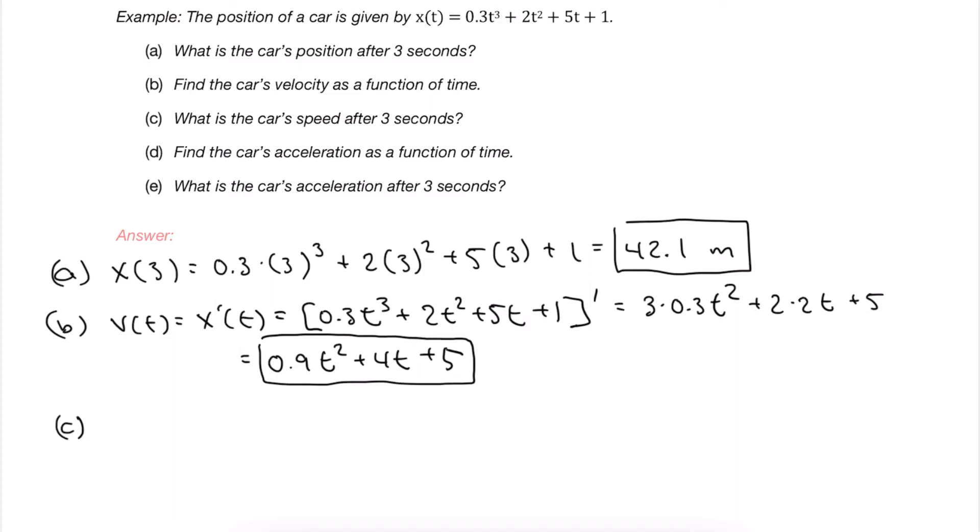In part C it's asking how to find the car's speed at 3 seconds, but that's simply a matter of plugging in the time 3 into our new velocity formula. Once we substitute it in and simplify, we can see our value here.